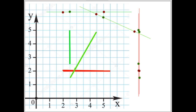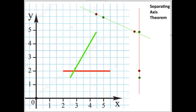Here is another example: the projection perpendicular to the green line has the green point in between the red ones, the red line's projection has the red point in between the green ones, so this time the line segments are intersecting.